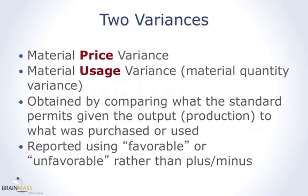The difference will be assigned a label of favorable or unfavorable — we're not going to use pluses and minuses. The absolute value will be given a favorable or unfavorable descriptive tag.